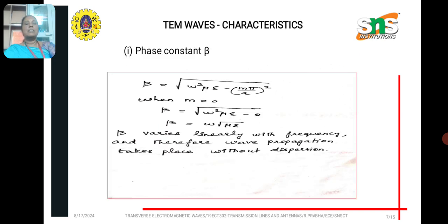And now, we are going to derive the characteristics of TEM waves. As the first characteristic, its phase constant beta, for M is equal to zero,